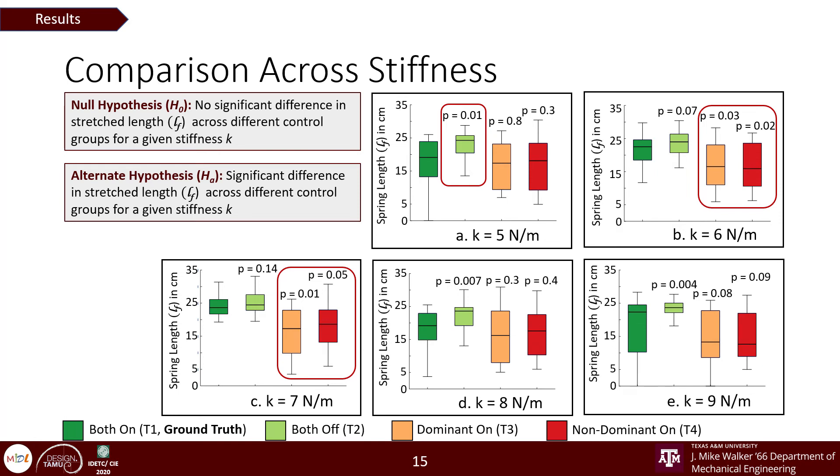For stiffness values 8 and 9, we observed a significantly larger pull to identify any asymmetry in the both devices off condition, which means that the participants maintain symmetry even in the absence of force.